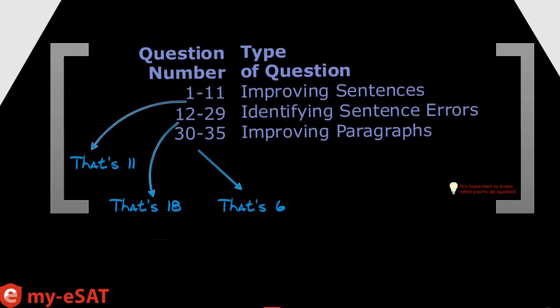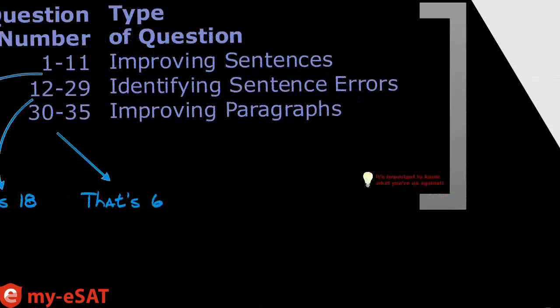In the second writing section, there are three different types of multiple choice questions. I want you to write this down: you'll see 11 improving sentence questions, 18 identifying sentence error questions, and 6 improving paragraph questions. We'll go over each of these question types in a bit, because knowing what you're up against is half the battle — and that is one cliché that is true.